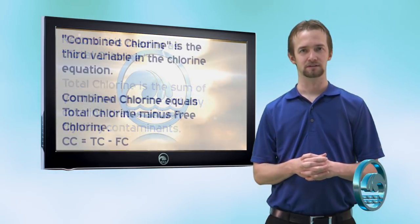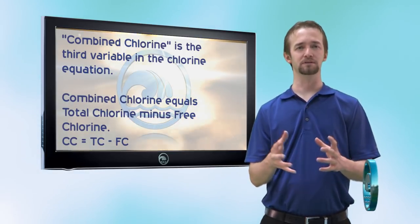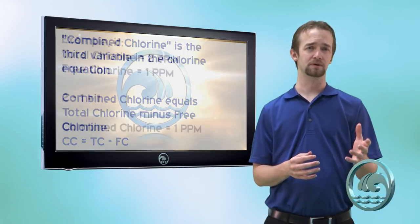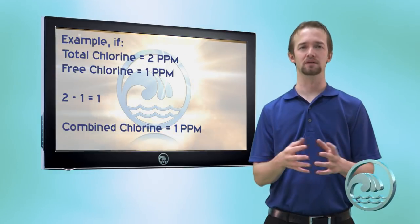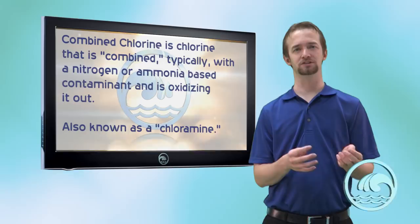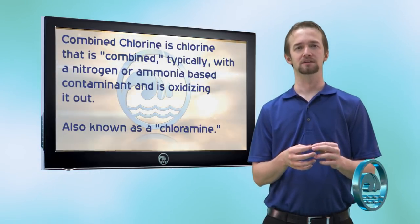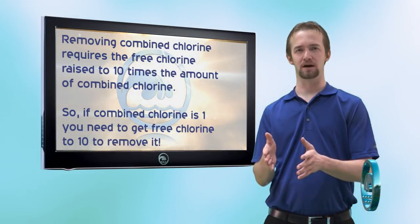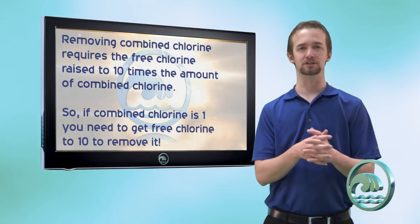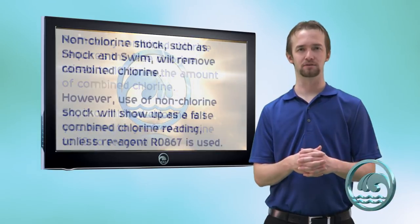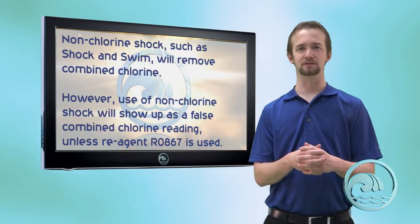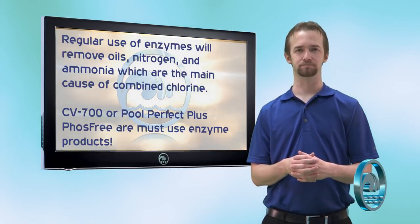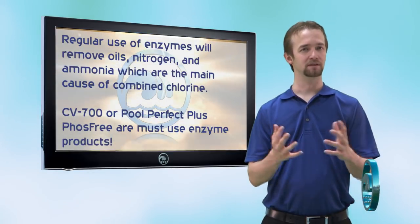The last chlorine reading is called combined chlorine. You simply take your total chlorine reading and subtract the free chlorine reading. So if your total chlorine is 2 and your free chlorine is 1, your combined chlorine is 1. Combined chlorine is chlorine attached to a nitrogen or ammonia-based contaminant that it's oxidizing. Sometimes combined chlorine turns into chloramines, at which point you'll have to shock the pool to ten times the combined chlorine level — so if combined chlorine is 1, you need to shock to 10 ppm free chlorine. Other solutions include shock-and-swim or regular use of enzymes.